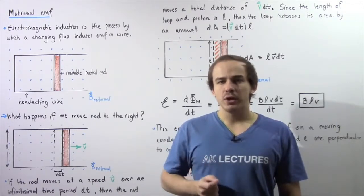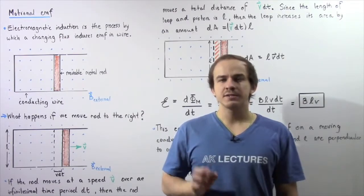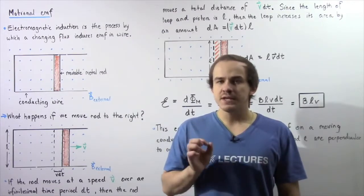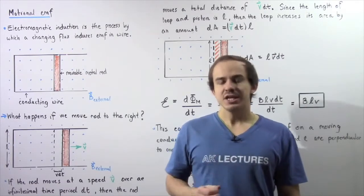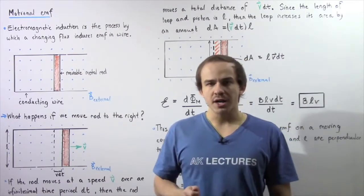There are three ways by which a change in magnetic flux can take place. One of these ways is by changing the area of the loop of conducting wire.